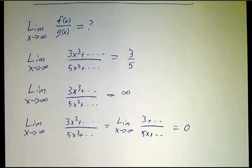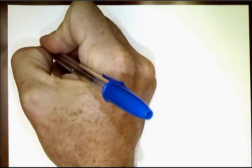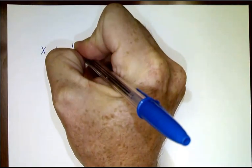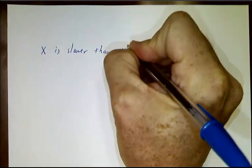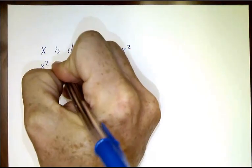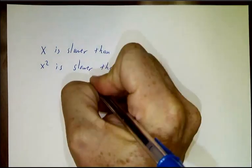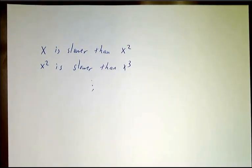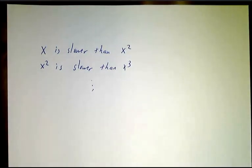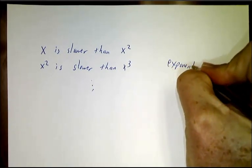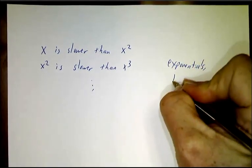So it's all a matter of a race. What's growing the fastest? One thing that's pretty obvious is that x is slower than x². x² is slower than x³ and so on. The more powers you have, the better. But it's not just powers. You also have exponentials and you also have logs.